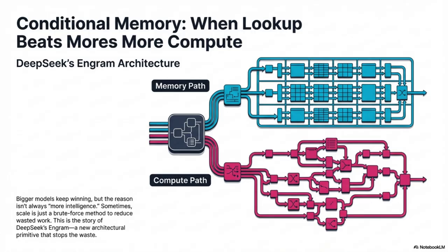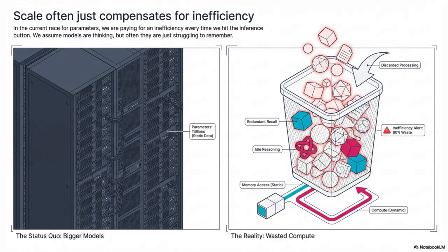That's the core tension in modern transformer scaling. We're looking at a really crucial architectural idea they're calling conditional memory. The inefficiency they're targeting is baked into the vanilla transformer — these models don't have a simple built-in way to look up common facts or structures.